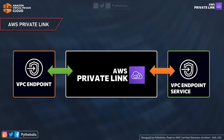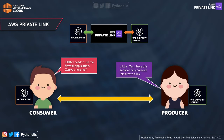When you think of Private Link, you need to understand two concepts clearly. One is the VPC endpoint, which creates an elastic network interface with a private IP that acts as the entry point for traffic to the service. The other is the endpoint service, where we create an AWS Private Link powered endpoint service so that the service we want to expose can be available for usage — one is the consumer and the other is the producer. Imagine John from the engineering team wants to use a firewall application provided by the security team where Lily works. They create a private link connection using an endpoint on John's side and a service endpoint on Lily's side to securely access the service without using a public internet connection.